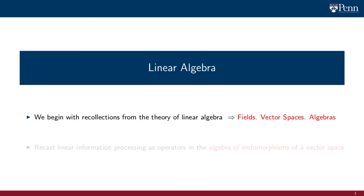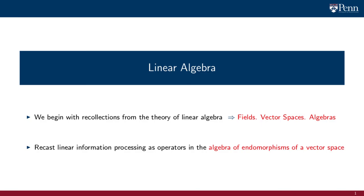Algebraic neural networks are rooted in the theory of algebraic signal processing, which is a recasting of signal processing in the language of abstract linear algebra. In this video we go over the foundational concepts of linear algebra: fields, vector spaces, and algebras. We will use these definitions to point out that linear information processing is tantamount to the application of operators that live in the algebra of endomorphisms of a vector space.